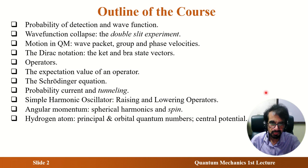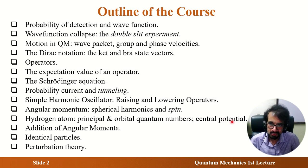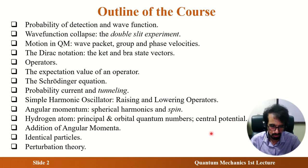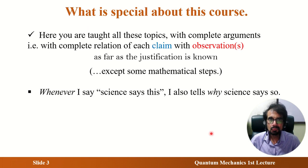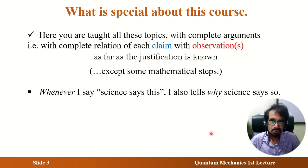The Schrödinger equation is not the only postulate, though it's often thought to be. Other postulates lead to expectation values, measurement averages, probability current, tunneling — another famous topic — simple harmonic oscillator in quantum mechanics, angular momentum, and the hydrogen atom. Those topics are necessary for anyone claiming university-level quantum mechanics. Additional topics include identical particles, Pauli exclusion, approximation methods, and perturbation theory.